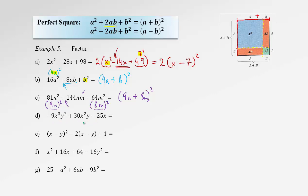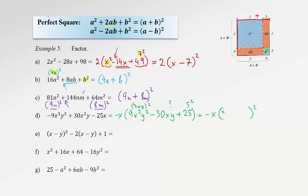In the next example, remember to check for a common factor first. We pull out negative x, so it's better to start with a positive term in the main bracket. Inside the bracket we have 9x squared y squared minus 30xy plus 25. The outside terms are perfect squares of 3xy and 5. We check: 3 times 5 is 15, doubled is 30xy — yes. So we fold it back to negative x times (3xy minus 5) squared.